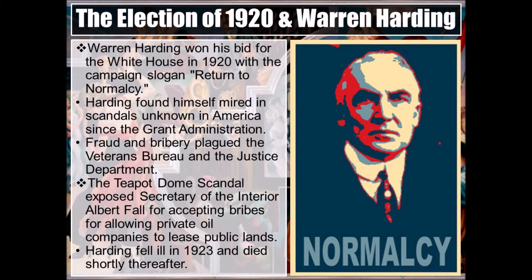The biggest scandal of the Harding administration was the Teapot Dome scandal. It involved the Department of the Interior — Secretary Albert Fall, one of Harding's Ohio gang cronies, had sold Navy oil reserves to a couple of big oil men. He was the first cabinet member to ever go to jail. Harding tried to deflect attention from the scandals by going on a months-long public tour of the western states, including the first presidential trip to Alaska, but his efforts came to an abrupt end in San Francisco when he suffered a heart attack.